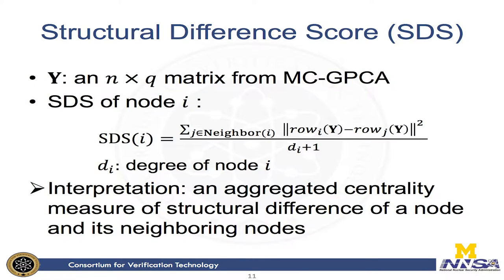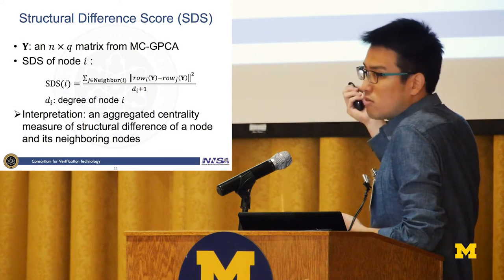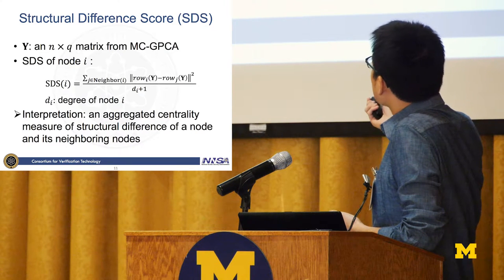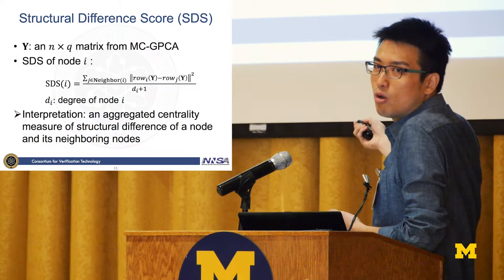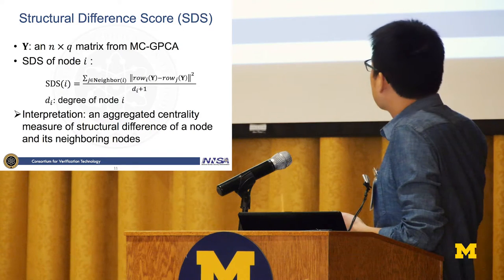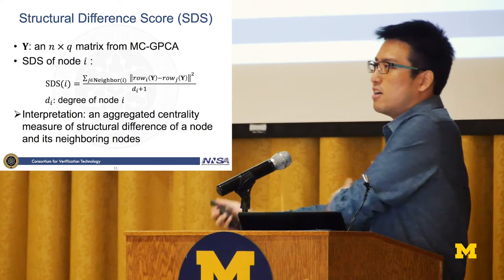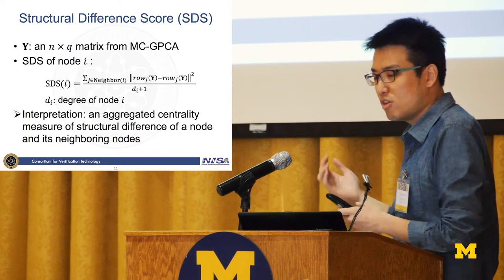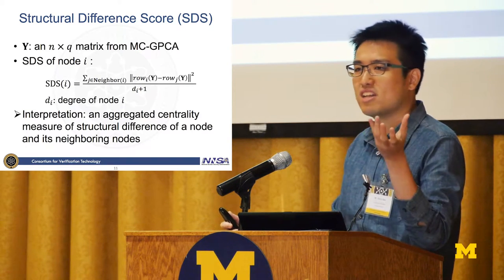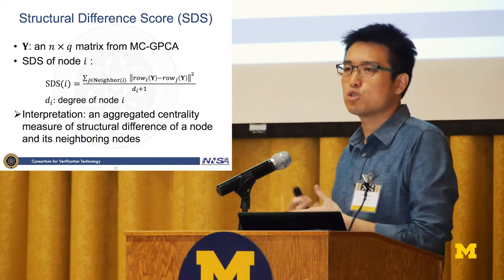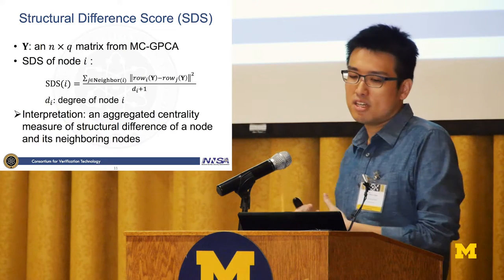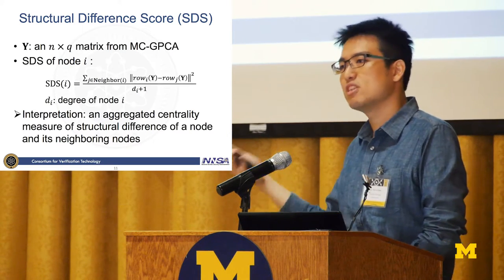Based on graph PCA, we define an aggregated centrality measure called the Structural Difference Score (SDS). We have a low-dimensional matrix Y (n-by-q). For each node, SDS is the squared difference between a node's vector representation and those of its neighbors, summed over all neighbors and divided by the degree — the per-hop difference to neighboring nodes. Intuitively, in a normal network, SDS scores should be low. When anomaly patterns occur, SDS scores become high because some nodes behave very differently from their neighbors.